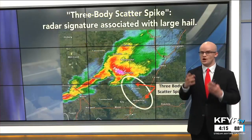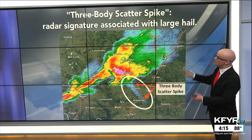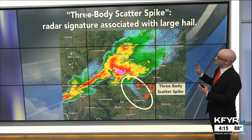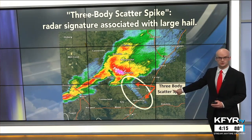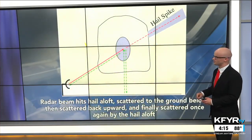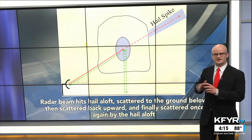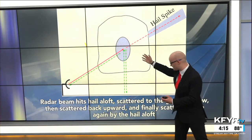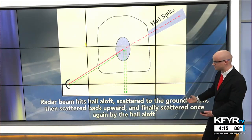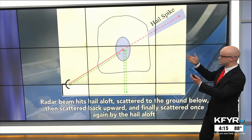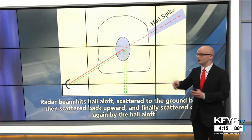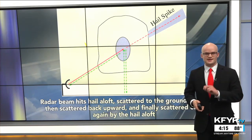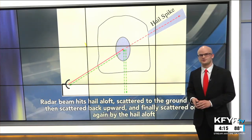With supercell thunderstorms that contain large hail, we can use a radar signature called the three-body scatter spike to indicate the presence of large hail. It's a kind of radar artifact — the radar beam enters the thunderstorm cell, hits a lot of hail aloft, and that energy scatters down to the ground, back up toward the hail, and back toward the radar, generating a spike on radar imagery that tells us there's very large hail within that supercell thunderstorm.